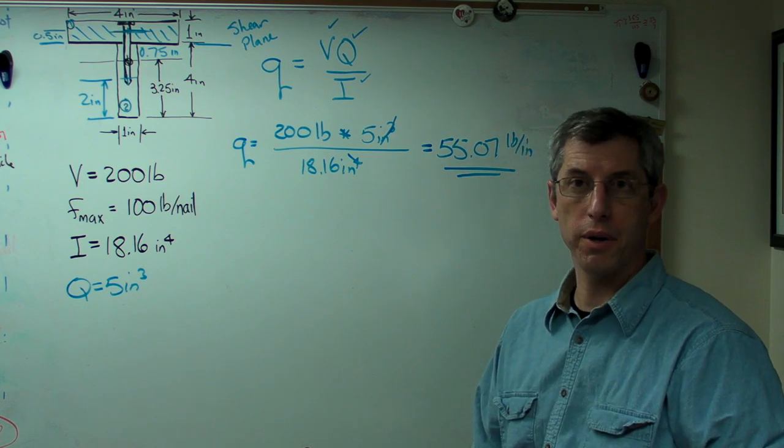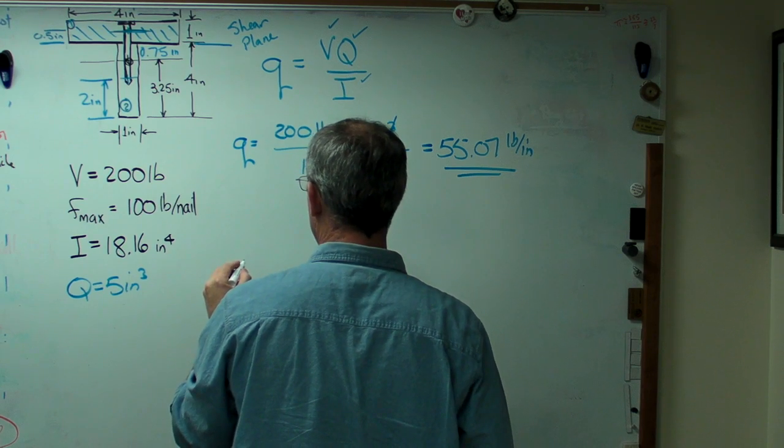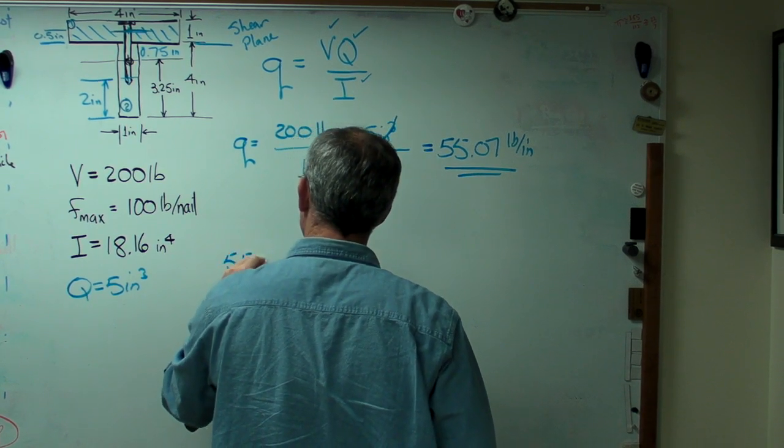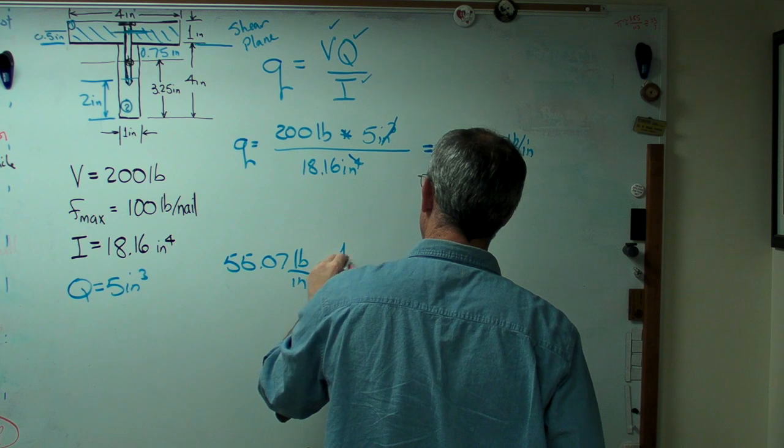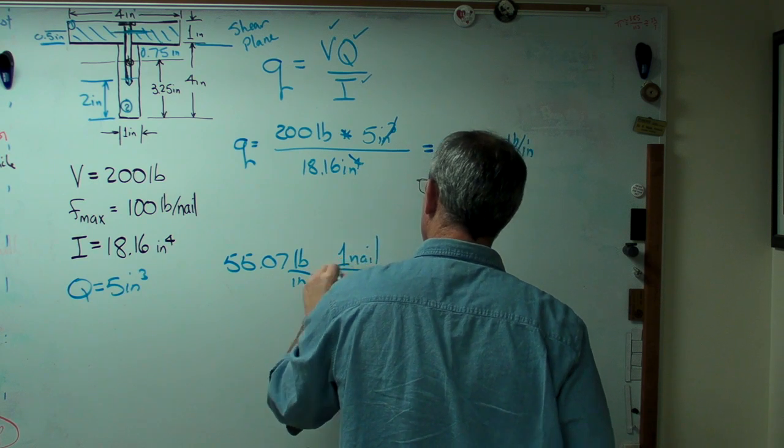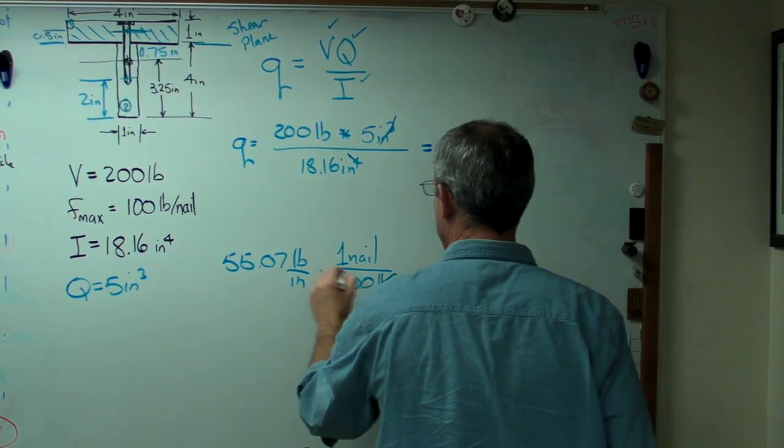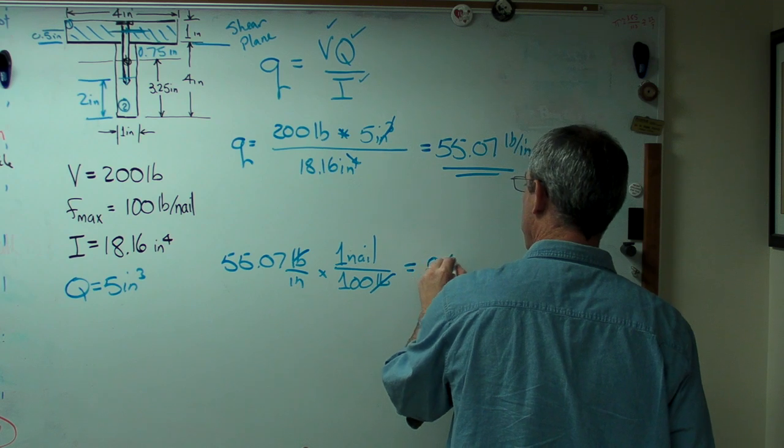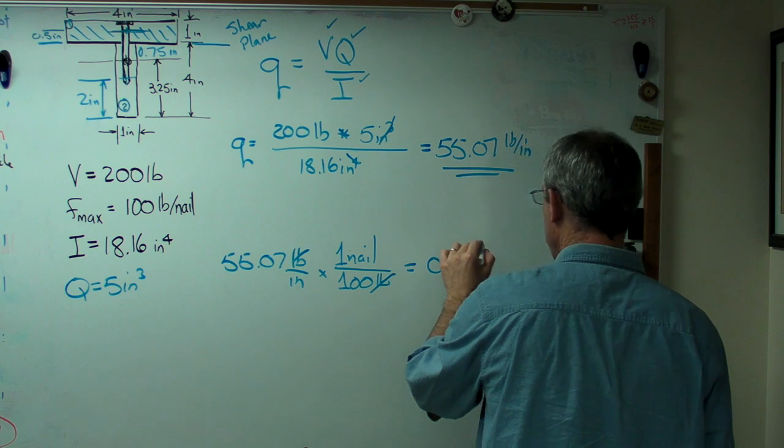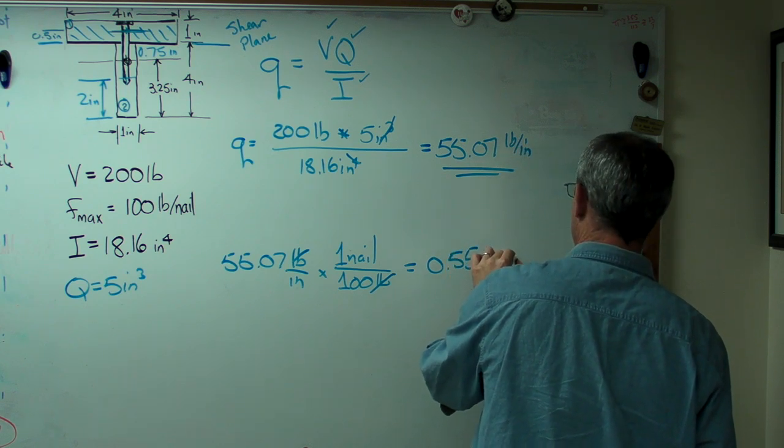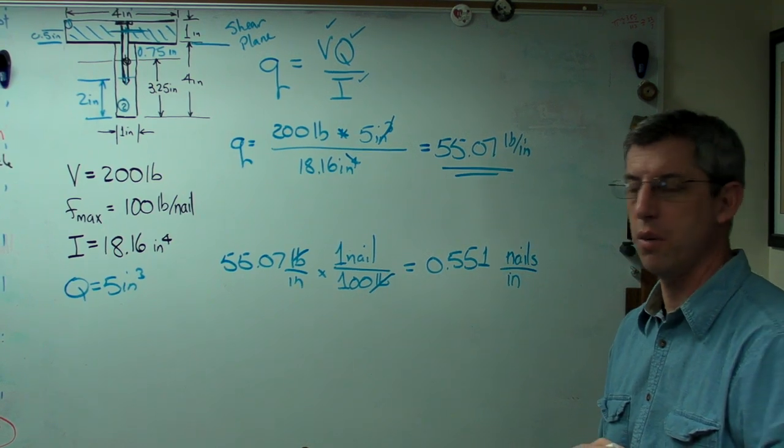Now let's go ahead and find out how far apart these nails have to be. This is just a simple units calculation. If I have 55.07 pounds per inch and one nail can withstand 100 pounds, I can cross units out. And I get 0.5, I'll just round that off to 1. Nails per inch. So half a nail per inch.